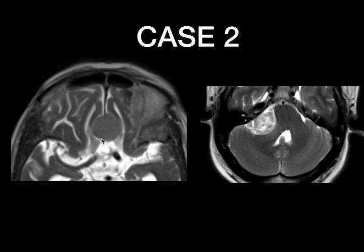You can see the CSF cleft between the cortex and the tumor, though it is not well appreciated in this section because of thicker slices. Thinner sections are needed for better delineation of extra-axial lesions. This is a classic case of a CP angle schwannoma — you can see the mass effect, the broad base along the dura, and a thin strip of CSF between the lesion and the cerebellar peduncle.